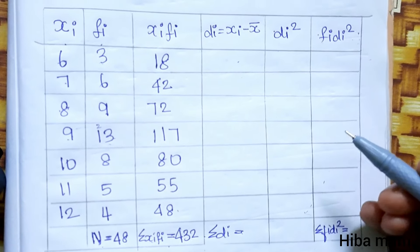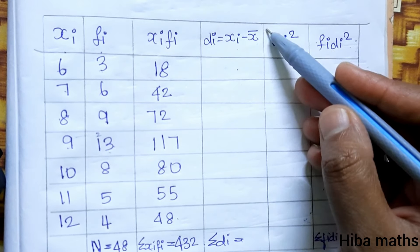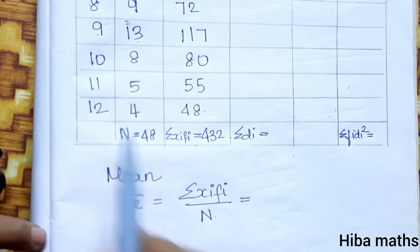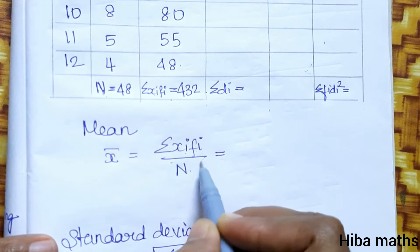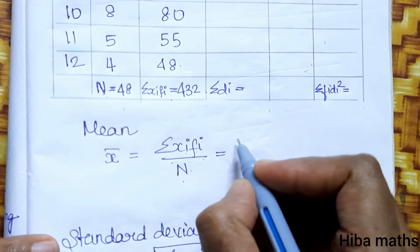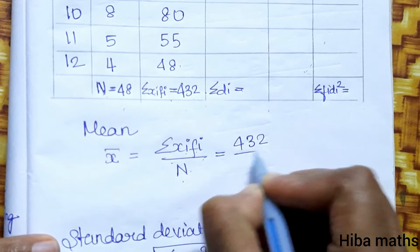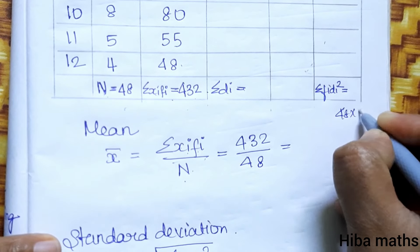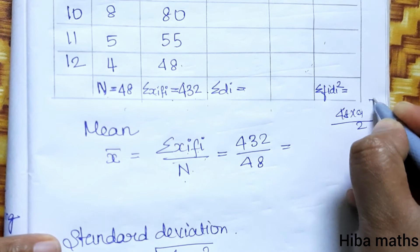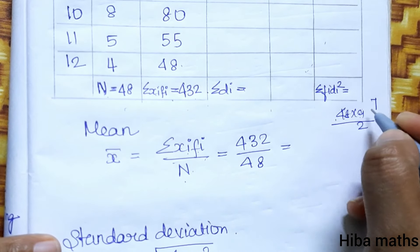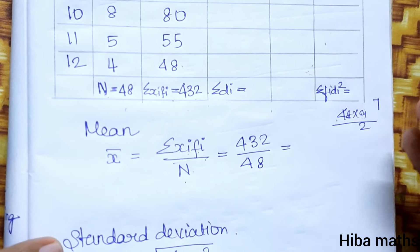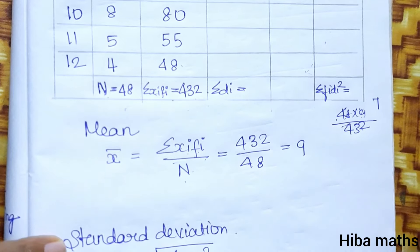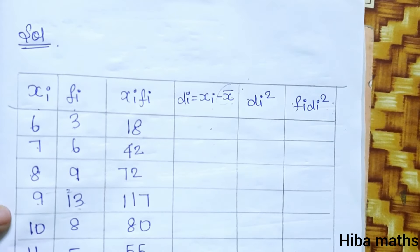Now for the next column, we calculate xi minus x bar, the mean. The mean equals summation of xi*fi divided by N, which is 432 divided by 48. If you divide it, 48 into nine gives 432, and the mean value is 9.